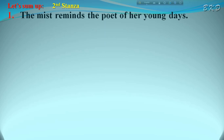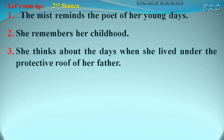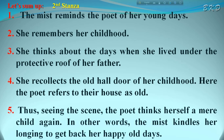Now let's sum up the second stanza. The mist reminds the poet of her young days and her childhood. She thinks about the days when she lived under the protective roof of her father and recollects the old hall door of her childhood. The poet refers to their house as old. Seeing this scene, the poet thinks herself a mere child again. In other words, the mist kindles her longing to get back her happy old days — this is the effect of the mist on the poet.